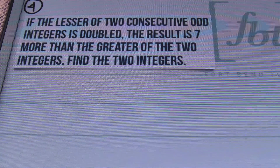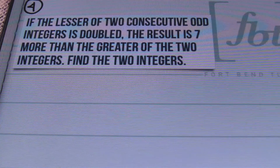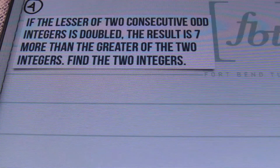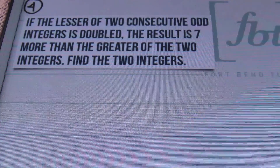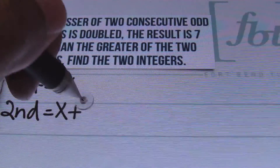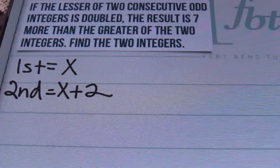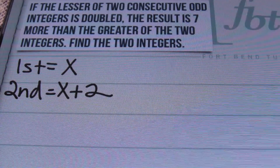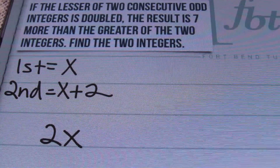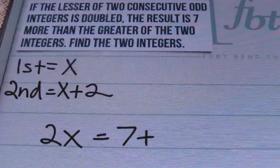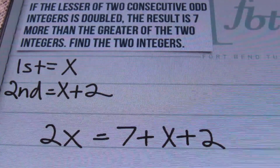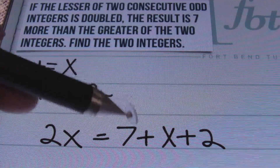Number four is our last word problem for today's lesson. If the lesser of two consecutive odd integers is doubled, the result is 7 more than the greater of the two integers. Find the two integers. We're dealing with two odd integers, so let's define them. The first is the unknown variable X, and the second odd integer is X plus 2. To write our equation: doubling the smaller gives 2X, and it must equal 7 more than the greater, which is X plus 2. So the equation is 2X equals 7 plus (X plus 2).